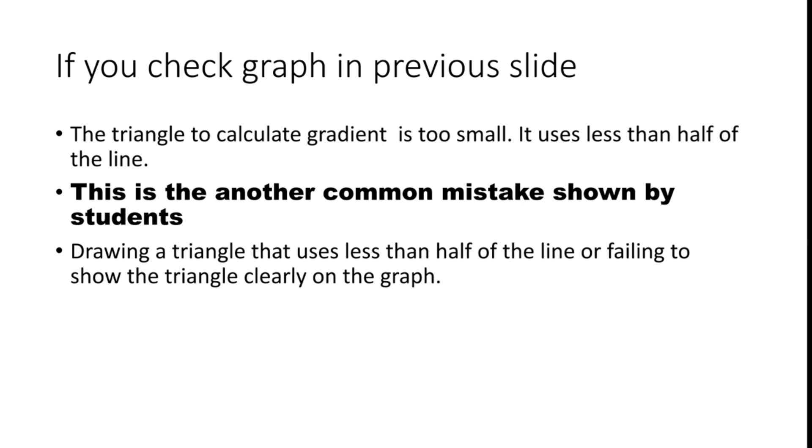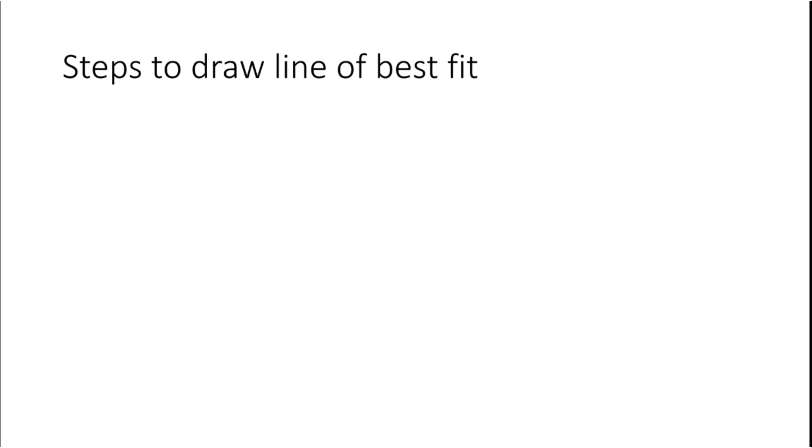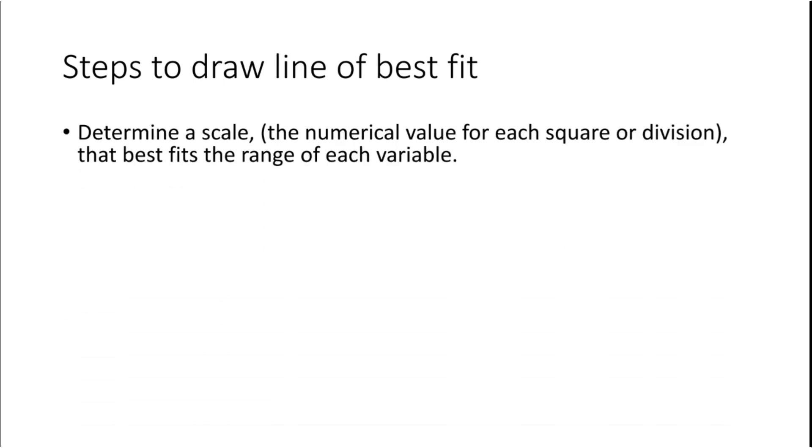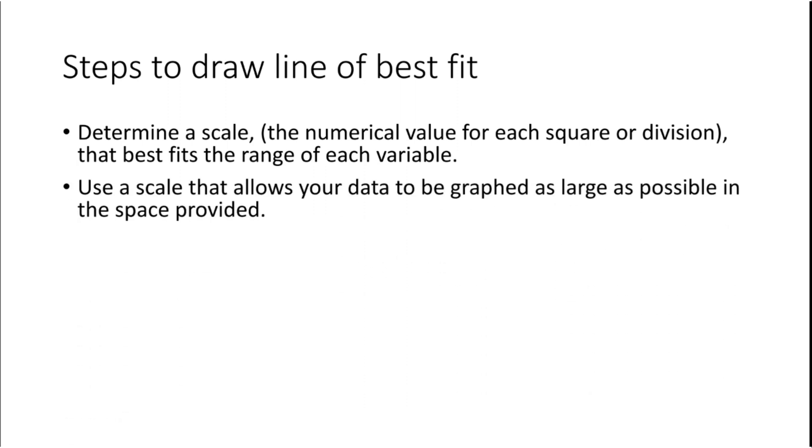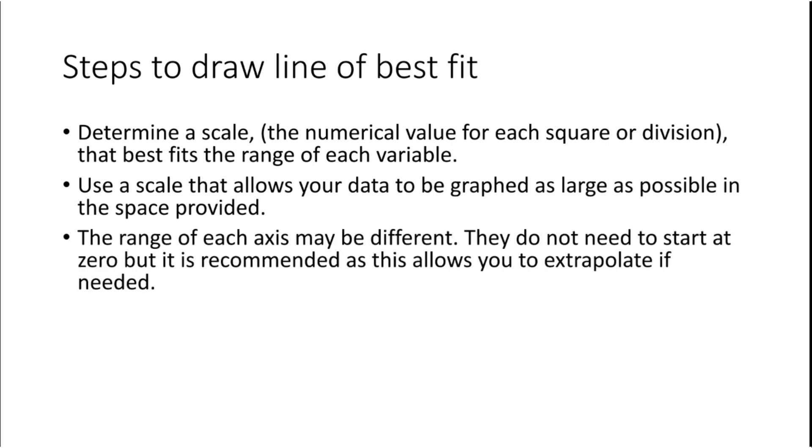These are steps to draw line of best fit. First, determine a scale, the numerical value for each square or division that best fits the range of each variable. Second, use a scale that allows your data to be graphed as large as possible in the space provided. Third, the range of each axis may be different. They do not need to start at zero but it is recommended as this allows you to extrapolate if needed.